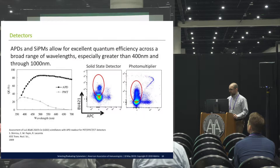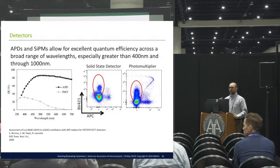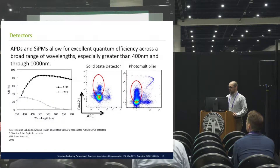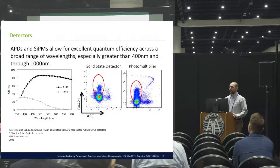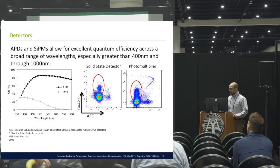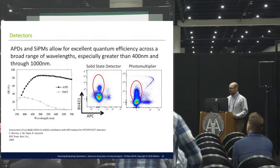PMTs can convert shorter wavelength photons pretty well, but especially when you get into the further red region, that's where PMTs suffer in terms of quantum efficiency. Whereas APDs have the unique characteristic of having really good quantum efficiency all the way out to the very far red range, even into the near-infrared. At the very low end they suffer a little from very low wavelengths, but for high-wavelength, low-energy photons they do a really good job, which translates into better resolution.